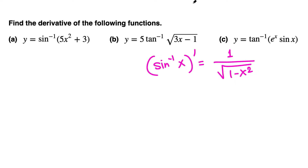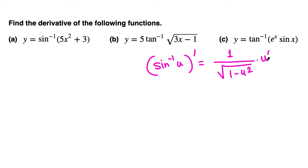But if we have something other than x — a function of x, let's say u — then the derivative will be 1 over the square root of 1 minus u squared, times the derivative of u, from the chain rule. If u is just x, the derivative of x is 1, so we don't multiply by anything extra.